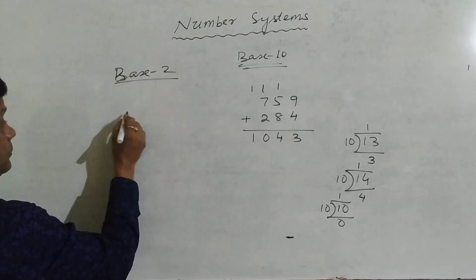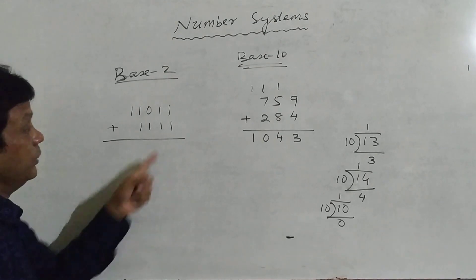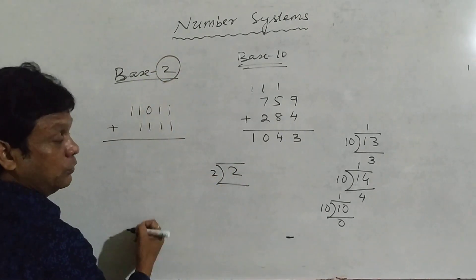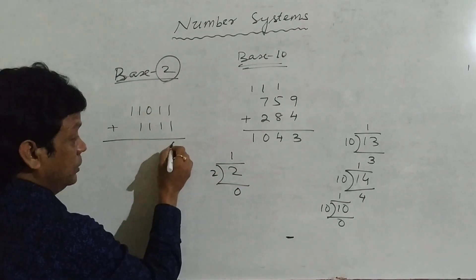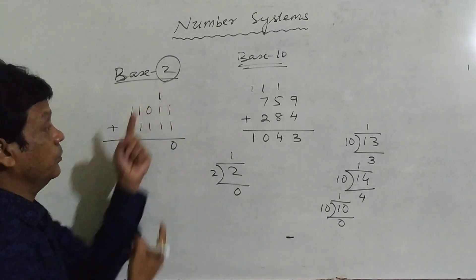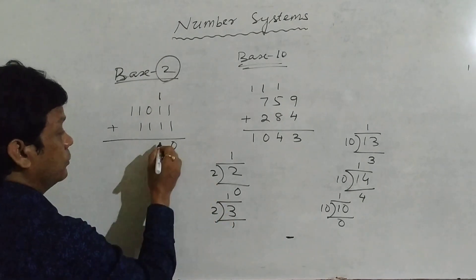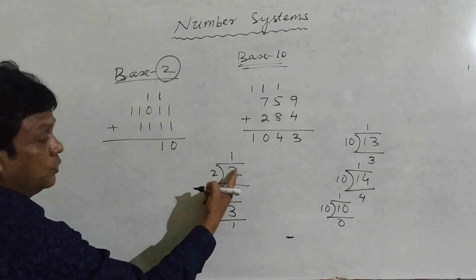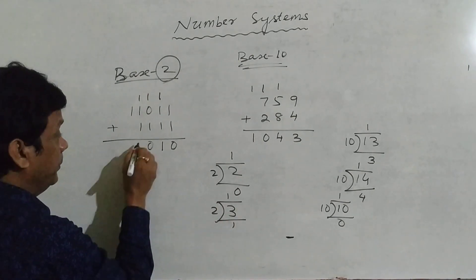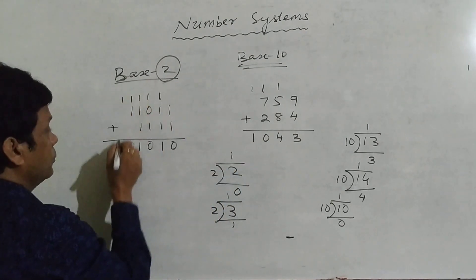Base 2 — binary number system. Take 1 1 0 1 1 plus 1 1 1 1. Starting from the right: 1 plus 1 is 2; divide by base 2 — quotient 1, remainder 0, so write 0 and carry 1. Next: 1 plus 1 plus 1 is 3; divide by 2 — quotient 1, remainder 1, carry 1. Then 1 plus 1 is 2: remainder 0, carry 1. Again 1 plus 1 plus 1 is 3: remainder 1, carry 1. Finally 1 plus 1 is 2: remainder 0, carry 1. The result is written out accordingly.